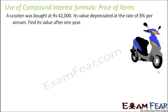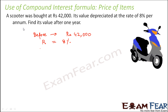The compound interest formula can also be helpful in finding out the price of items. A scooter was bought at Rs. 42,000. Its value depreciated at the rate of 8% per annum. Find its value after one year. Whenever you have a number with an increase or decrease over a period of time, you can find its final value using the compound interest formula. The initial price of the scooter was Rs. 42,000, and the rate of depreciation is 8% per annum on a yearly basis. The time period is one year.